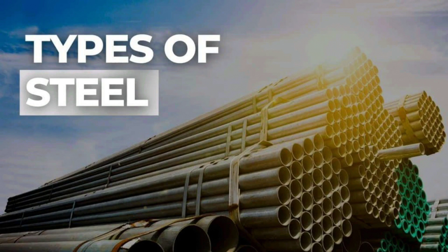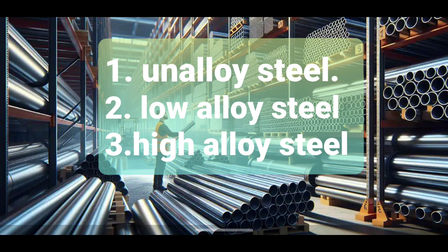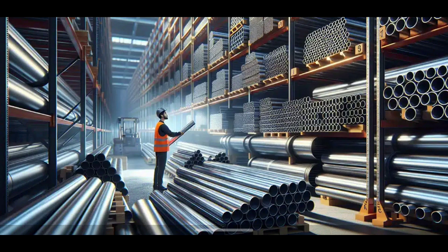Hello guys and welcome to Ship Inside. Today we will discuss the classification of steels. Steel is an alloy of iron and carbon, and basically steel can be classified into three grades: unalloyed steel, low alloy steel, and high alloy steel. Unalloyed steel contains less than one percent alloy by weight, with examples including